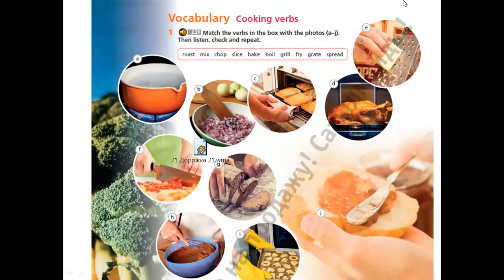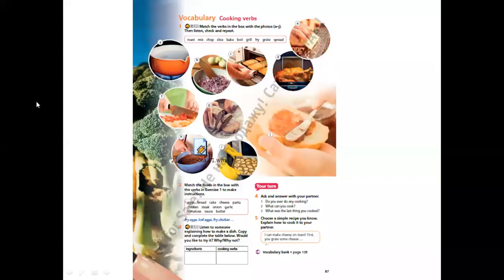Let's go to the next slide and check our answers. The cooking verbs are: B - Fry, C - Grill, D - Roast, E - Grate, F - Chop, G - Slice, H - Mix, I - Bake, J - Spread.